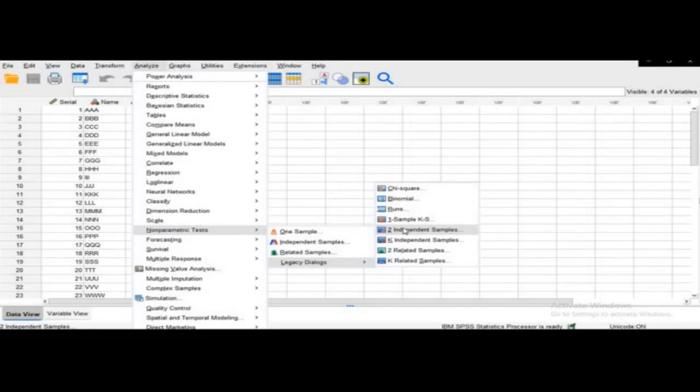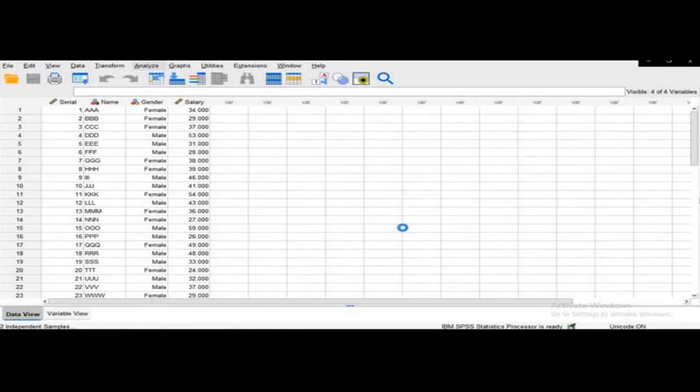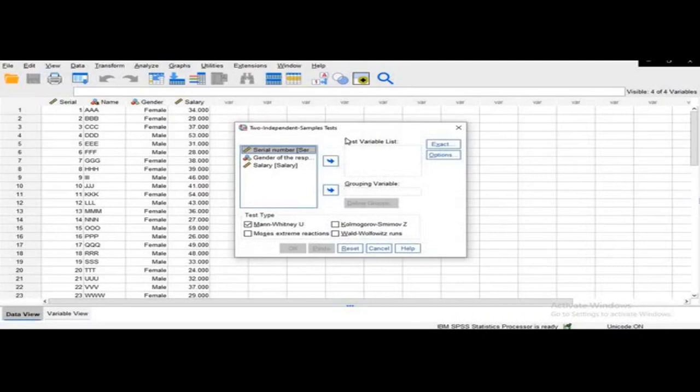From Two Independent Sample, there appear two boxes: Test Variable List and Grouping Variable.